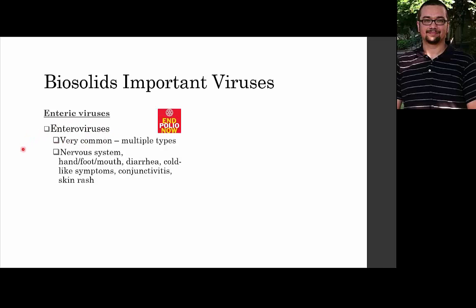The first family are the enteroviruses — most famously, or infamously, the polioviruses. This group also includes Coxsackievirus, echovirus, and enterovirus. There are multiple types in this group, and they cause a handful of conditions: hand, foot, and mouth disease — common in daycares if you have kids — as well as diarrhea, cold-like symptoms, and conjunctivitis.